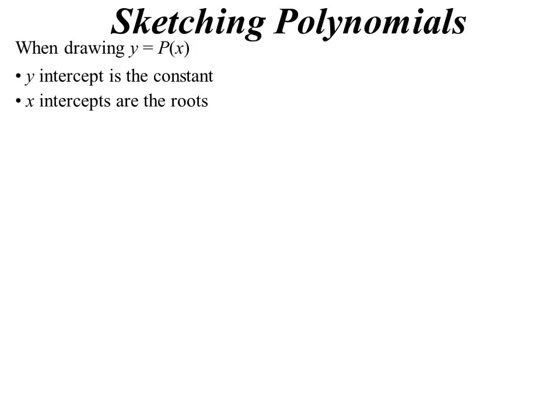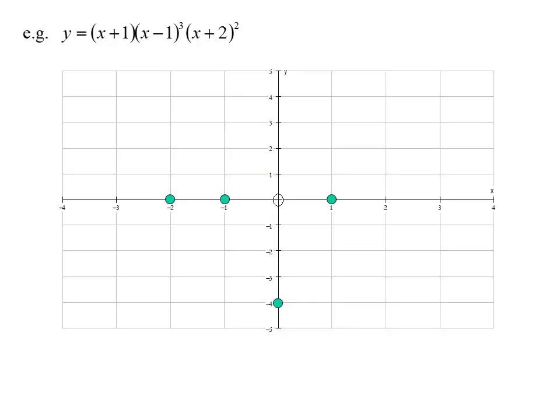The x-intercepts are the roots of the, well remember the subtle difference? The x-intercepts are the roots of the equation, zeros of the function. So let's find those nicely. It's factorized for us so we can see them straight away. We've got that one at negative 1, and there's one at positive 1, and another one at negative 2.